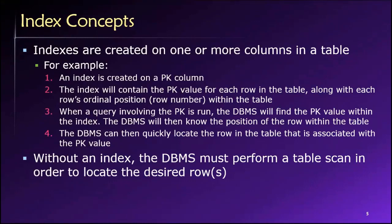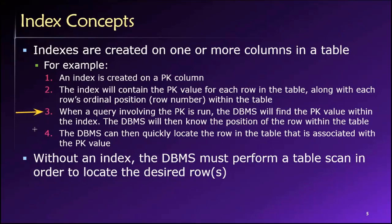So if we build an index on the primary key, we're going to have, as part of the index, the primary key values along with a pointer to the underlying row. As we see here in step three, if we run a SQL SELECT query that involves this primary key, then the database can find the primary key value very quickly by looking in the index. And just like using the index at the back of a textbook, the database will then know precisely where to look within the table to find the underlying row of data.